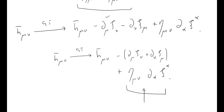General relativity, step by step. I've derived the gauge transformation here for the trace-reversed metric perturbation h-bar, which we found to be a little bit simpler, or resulted in a slightly simpler version of the Einstein field equations.